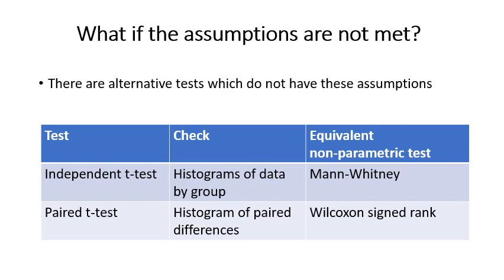If the assumptions are not met, there are alternative non-parametric tests. For the independent t-test, if normality is not met, you use its non-parametric equivalent: the Mann-Whitney test. For the paired t-test, if the normality assumption is not met, you use the Wilcoxon signed rank test.